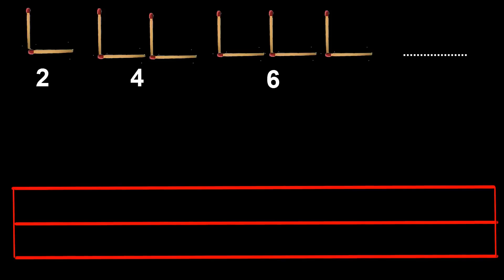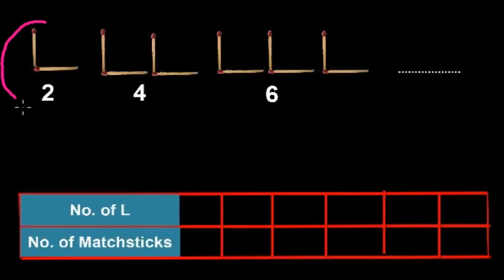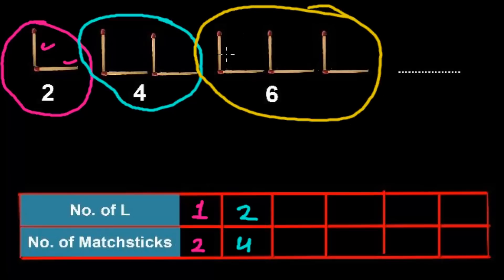Now let's try to understand the relationship between the number of L's and number of matchsticks. In the first column, I'm going to write the number of L's, and in the second column, the number of matchsticks we require. To make 1 L, we require 2 matchsticks. For 2 L's, we require 4 matchsticks. For 3 L's, we require 6 matchsticks, and this will keep going on.